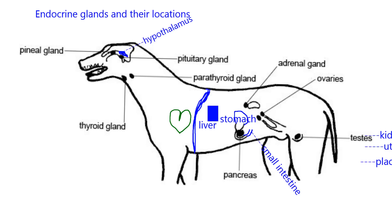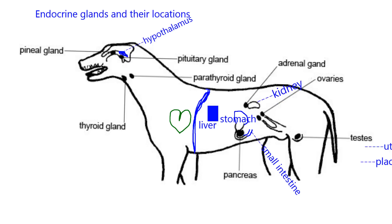That structure right behind the adrenal gland is the kidney. We're not seeing the other side of the animal, but of course there are two kidneys, and the kidney is endocrine tissue.